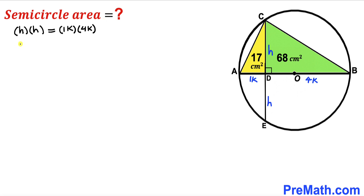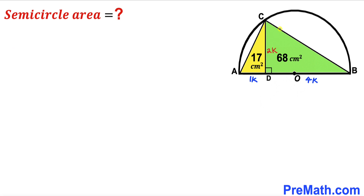Simplifying h² = 4k², we take the square root of both sides to get h = 2k. So the height CD turns out to be 2k.